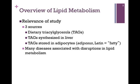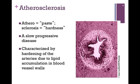Another relevance of our study of lipid metabolism is the fact that there are many diseases associated with disruptions in lipid metabolism. We will consider primarily atherosclerosis, which is a combination of two words: athero meaning paste, and sclerosis meaning hardness. So the word literally means hard paste — not a good word when considering the accumulation of that hard paste in arteries and veins. We have a photograph of an atherosclerotic plaque on the right of the screen. This is a slow, progressive disease characterized by hardening of the arteries, due to lipid accumulation in the walls of the blood vessel.